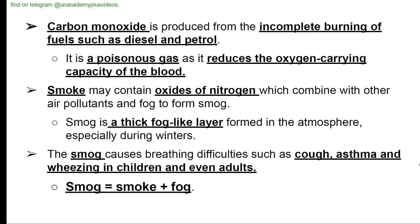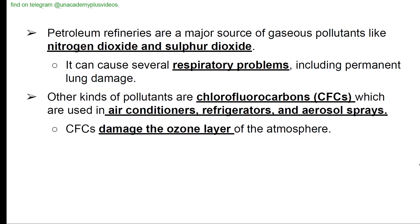Smoke may contain oxides of nitrogen which combine with other air pollutants and fog to form smog — a thick fog-like layer formed in the atmosphere, especially during winters. Smog causes breathing difficulties such as cough, asthma, and wheezing in children and adults. Petroleum refineries are a major source of gaseous pollutants like nitrogen dioxide and sulfur dioxide and can cause respiratory problems including permanent lung damage. Chlorofluorocarbons (CFCs), used in air conditioners, refrigerators, and aerosol sprays, damage the ozone layer.